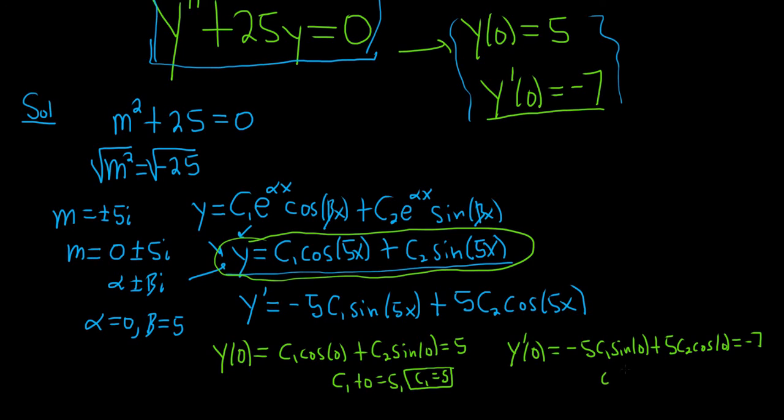Sine of 0 is 0, cosine of 0 is 1. So we get 5c₂ equals negative 7, giving c₂ equals negative 7/5.